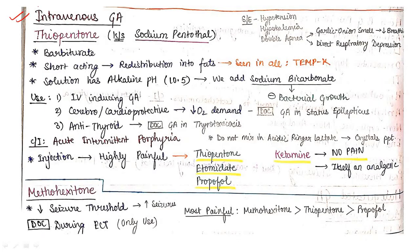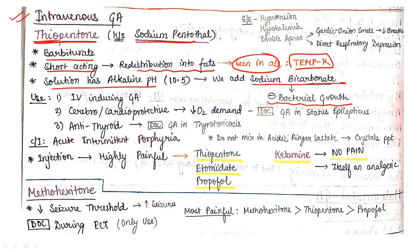Now intravenous general anesthetics. First is thiopentone, also known as sodium pentothal. It is barbiturate, short acting because of redistribution to fat - seen in all IV GA we'll discuss. Solution has alkaline pH. We add sodium bicarbonate to inhibit bacterial growth.